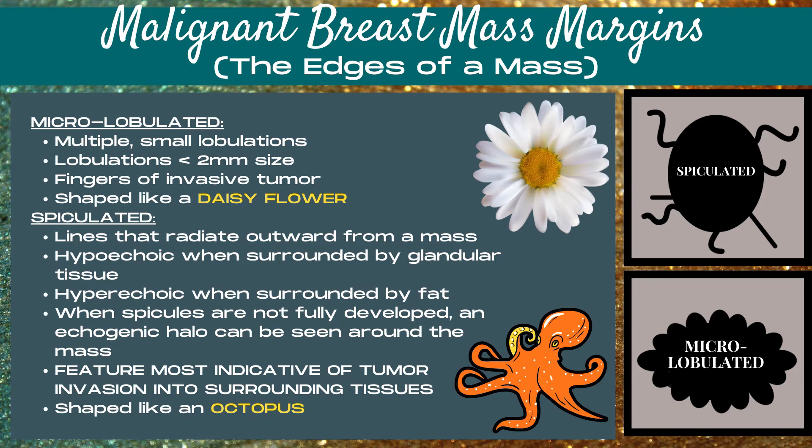Spiculated is our next category of malignant breast mass margins. These are lines that radiate outward from a mass. They're hypoechoic when surrounded by glandular tissue, or they can be hypoechoic when surrounded by fat. When the spicules are not fully developed, an echogenic halo can be seen around the mass. This is the most suspicious malignant mass margin — the feature most indicative of tumor invasion into surrounding tissues. For this margin, think of an octopus shape.